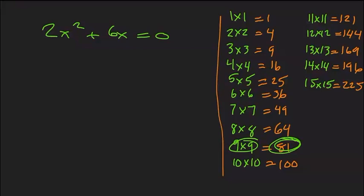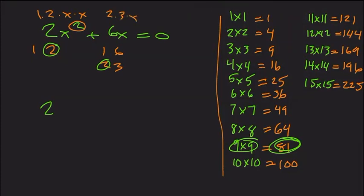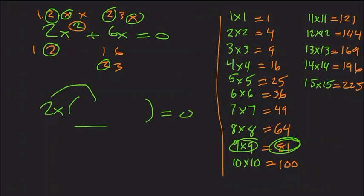Starting with the numbers: 2 factors as 1 times 2; 6 factors as 1 times 6 or 2 times 3. The biggest number that goes into both is 2. Also, 2x squared is 2 times x times x, and 6x is 2 times 3 times x — they share both a 2 and an x. So we're not just taking out a 2, we're taking out a 2x. Then 2x times what gives 2x squared? Focus on the number: 2 times 1 is 2, and we need another x to get x squared — so that's 1x.